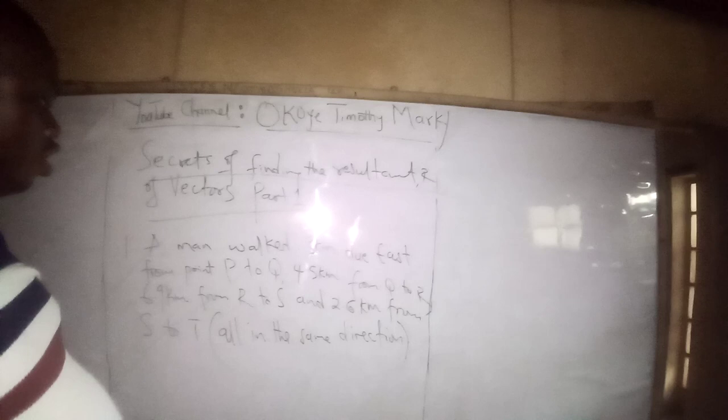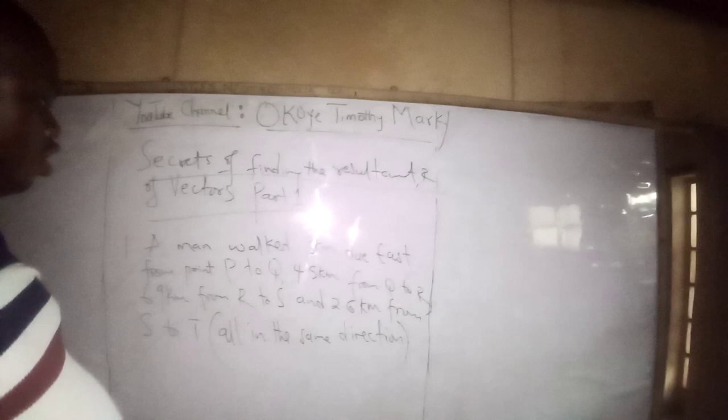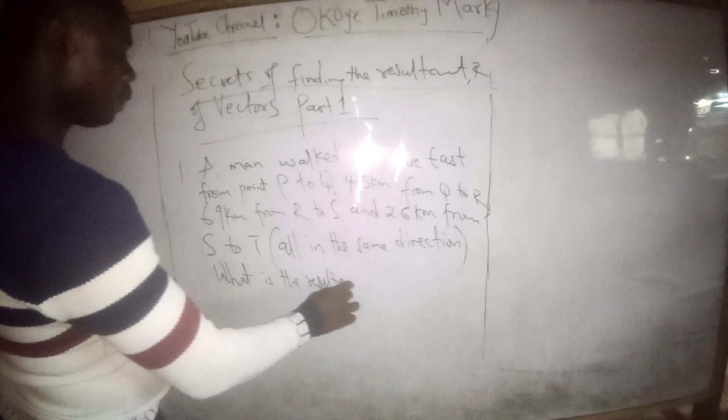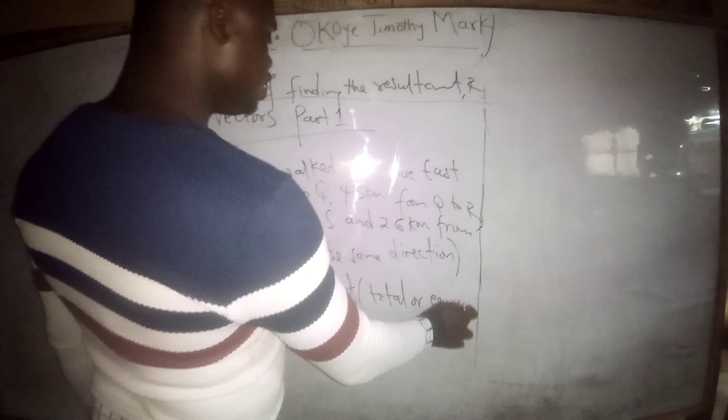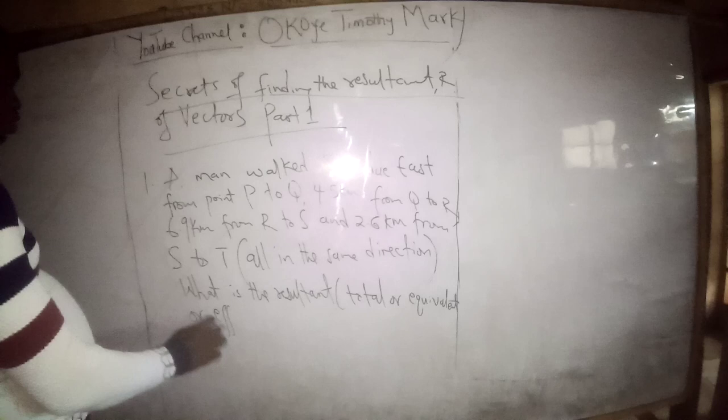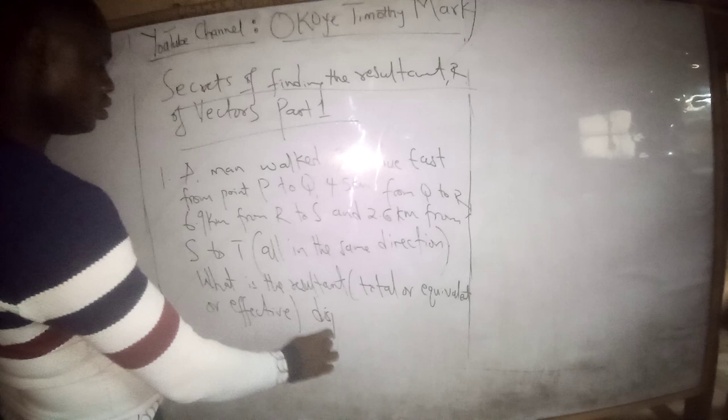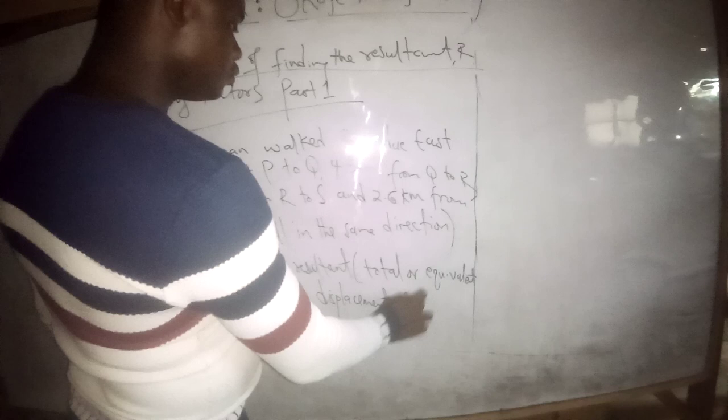All you need to do is find the resultant displacement of the man. The resultant can also be called the total, the equivalent, or the effective displacement of the man. Since they are all due east, simply add all the figures together. The sum is the total displacement.